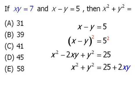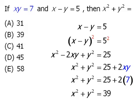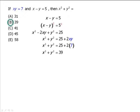Well we happen to know the value of xy, it equals 7. So we'll replace xy with 7, and finally we see that x squared plus y squared must equal 39, so our answer is B.